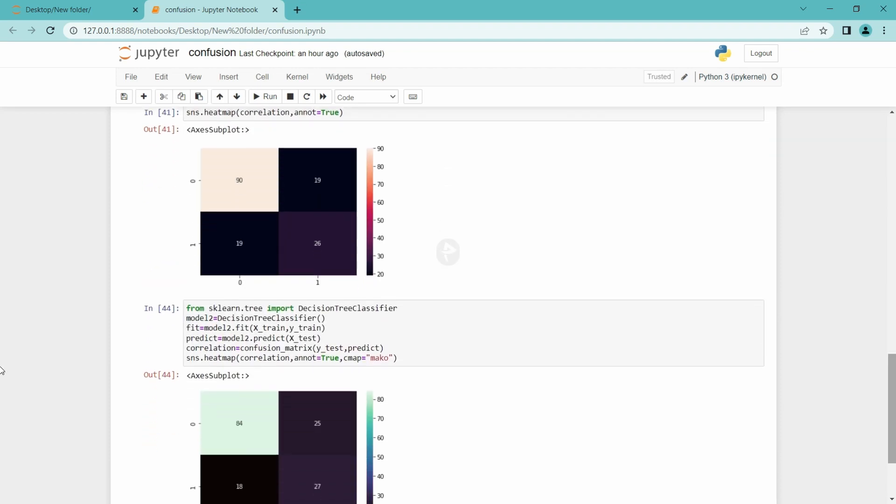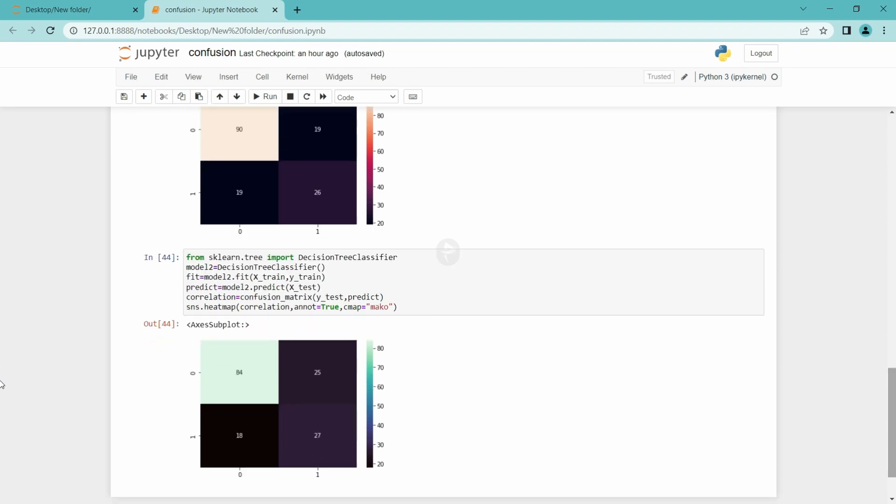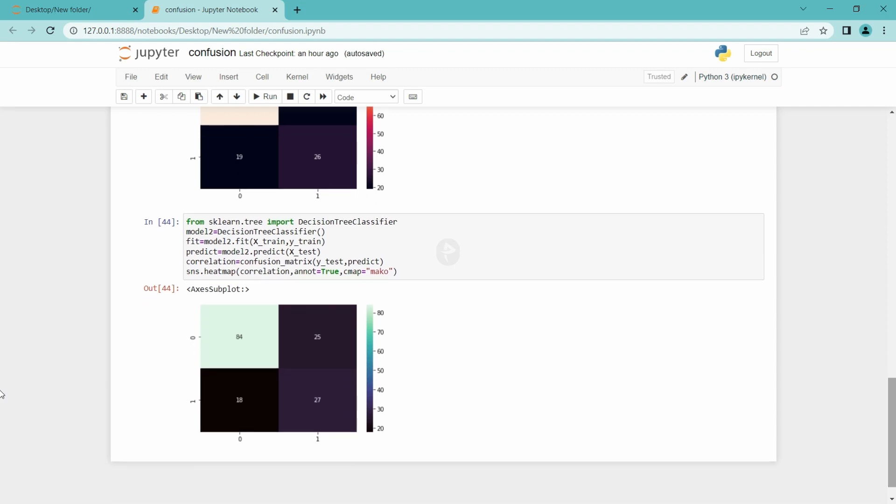Similarly, here next I have imported decision tree classifier. I trained and predicted and plotted the confusion matrix. In this model, it predicted 84 cases 0 as 0, and in 27 cases it correctly predicted 1 as 1. But in 18 and 25 cases it predicted wrongly. For this comparison visualization, confusion matrix is useful.